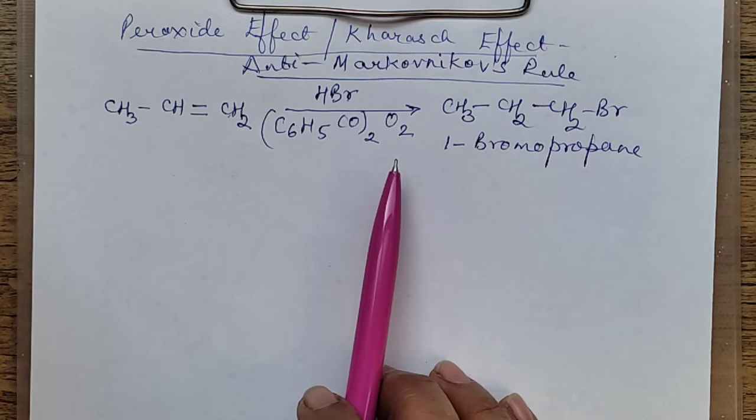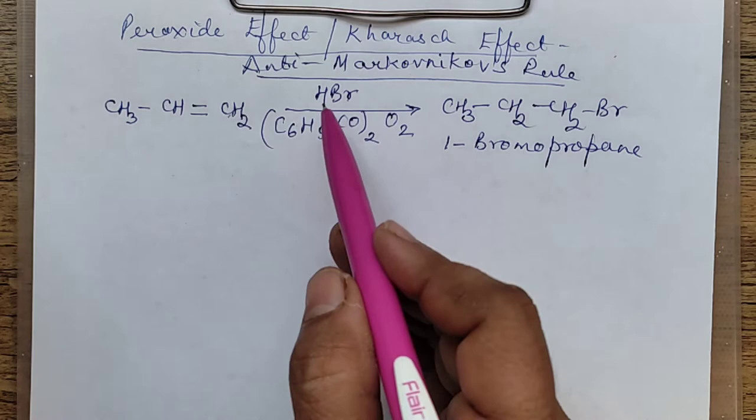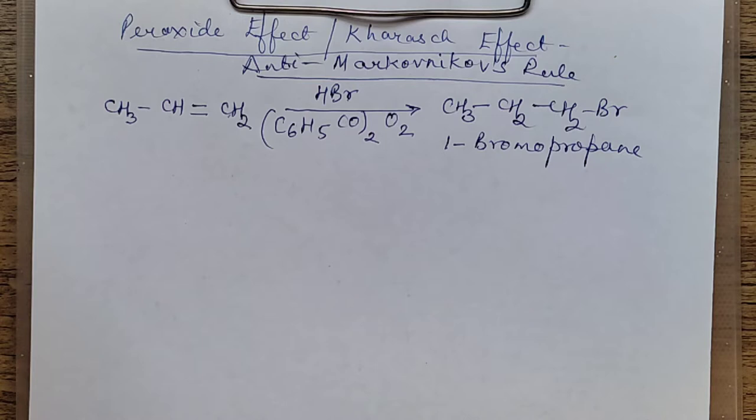Anti-Markovnikov's rule is only applicable for the addition of HBr — not for HI, HCl, or even HF.